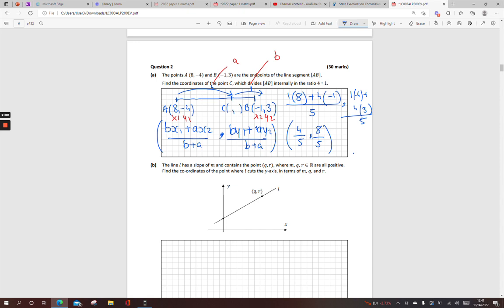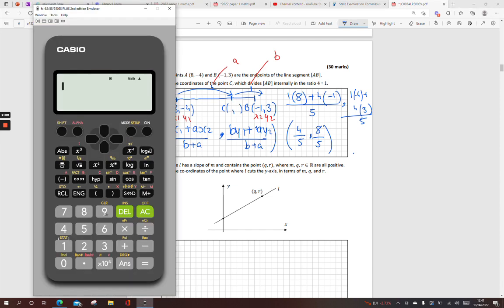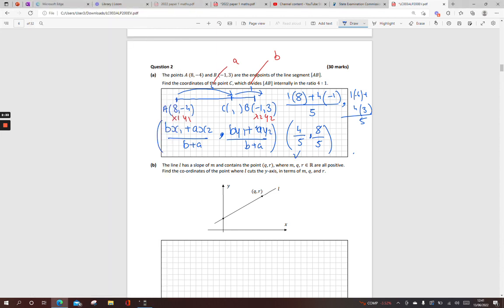Alternatively, some of you might have split that up using ratios. So, you worked out the distance between 8 and minus 1, which is 9 units. Divide that by 5, which is 9 over 5, multiply that by 4 because it's 4 units in. And then 8, subtract that as I'm going downhill. And we get 4 over 5, which we said there.